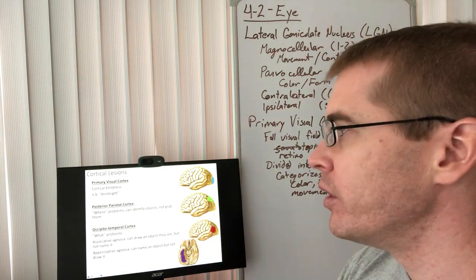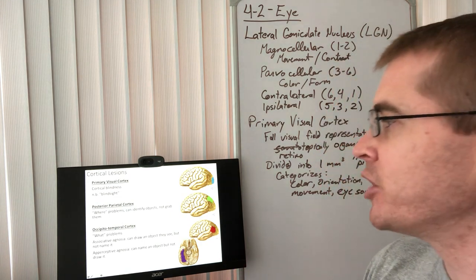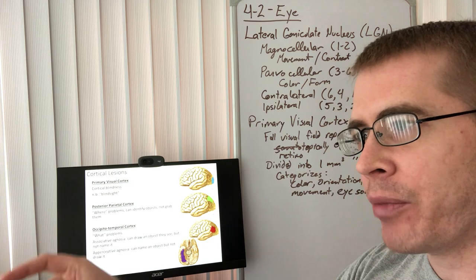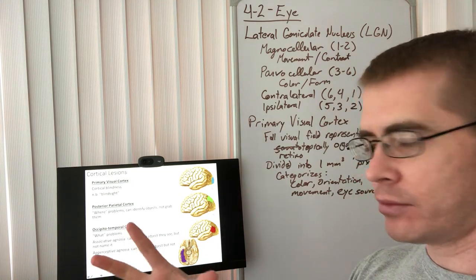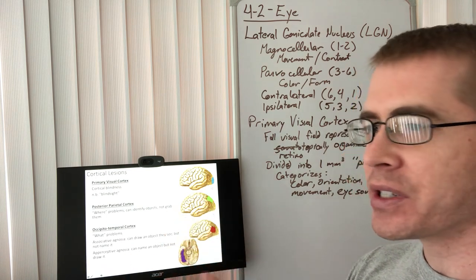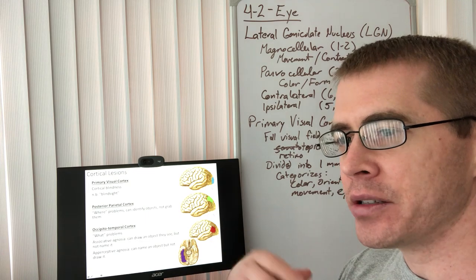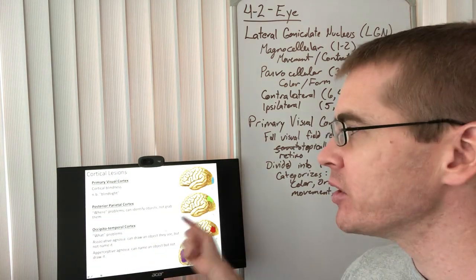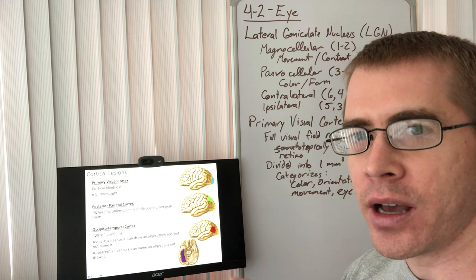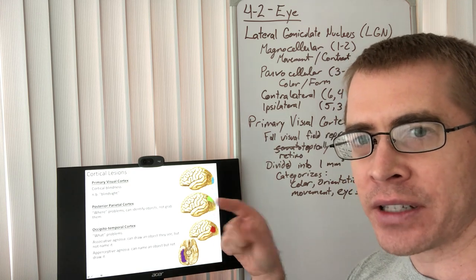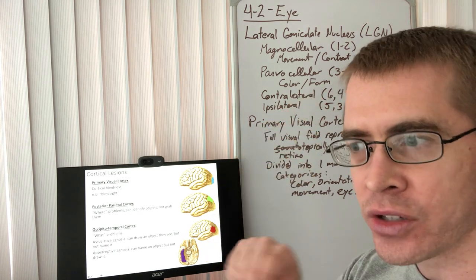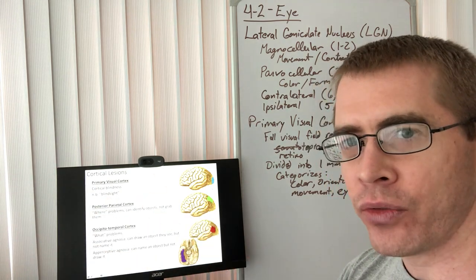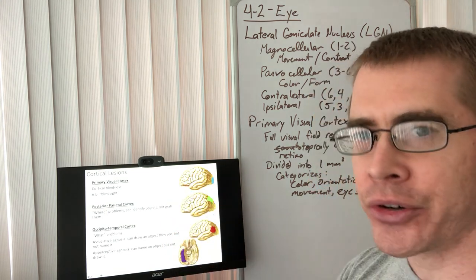Moving on to the parietal cortex — it gives us information about where an object is. People with damage to the posterior parietal cortex, you can show them something in their visual field and ask what it is, and they'll say that's a blue marker. But then if you say 'can you take it from my hand?' they'll have no idea where it is and won't be able to reach for it. Their parietal cortex is not telling them where the object is in their visual field, so it can't tell their primary motor cortex and frontal cortex where to reach. They can tell you with complete fidelity what is in their visual field, but can't coordinate their actions to grab it.